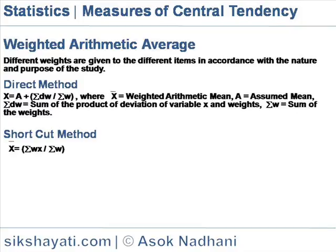Weighted arithmetic average. Weight in relation to the statistical data means the relative importance of the data. All the items of a series may not be equally important for the purpose of study. Different weights are given to the different items in accordance with the nature and purpose of the study.